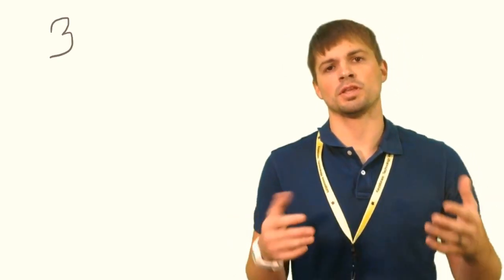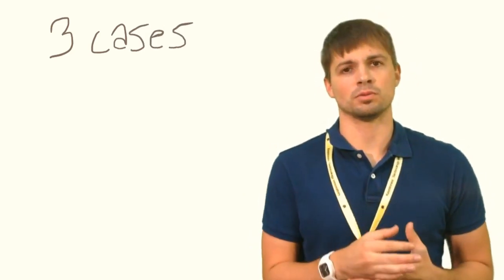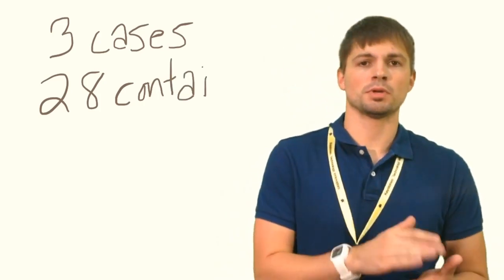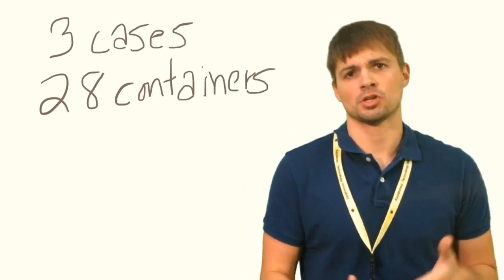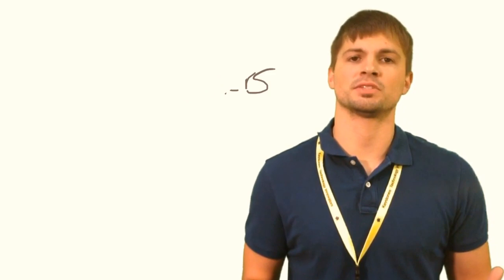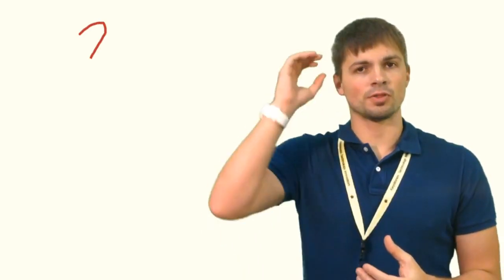Let's pose this first problem. A cafeteria orders three cases of milk, and each case contains 28 containers of milk, so we have the problem 28 times 3. Basic multiplication is repeated addition, so we could do 28 plus 28 plus 28. That's fine for this problem, but when we start doing 28 times 6, we don't want to add 28 six times — that would just be too much work.